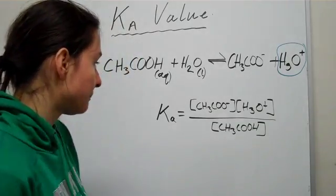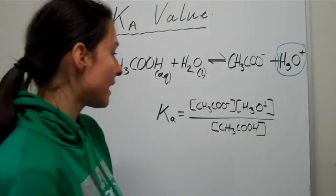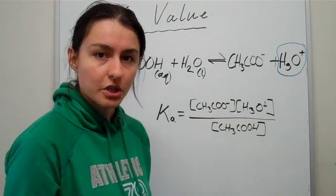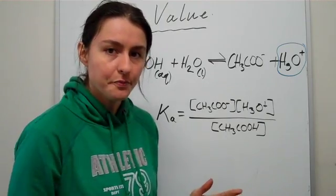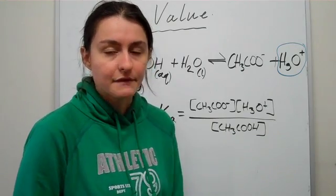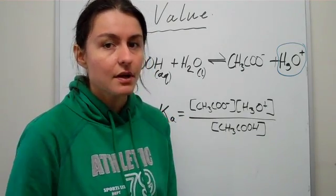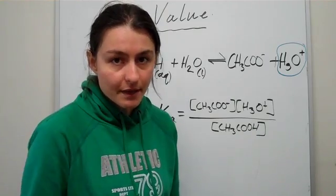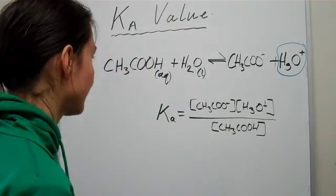Now that we have a Ka expression, we can analyze it and compare different acids to each other based on the Ka value. We can figure out how strong those acids are. If something has a very large Ka value or a very small Ka value, then we can say something about that particular acid.